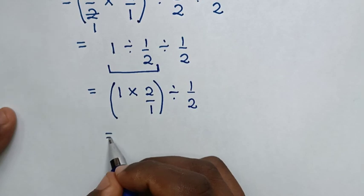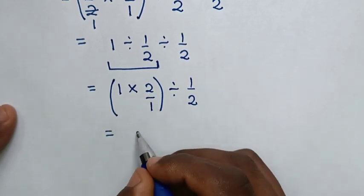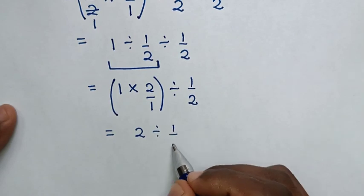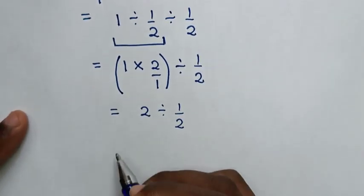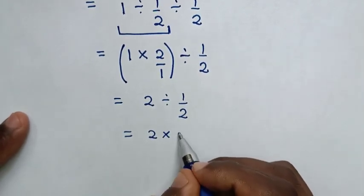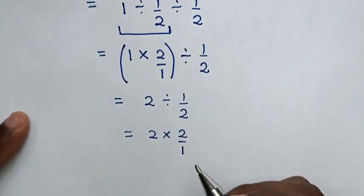Then in the next step, it will be equal to 1 times 2 is 2, then divided by 1 over 2. Then it will be equal to 2 divided by 1 over 2, which is the same as times 2 over 1.